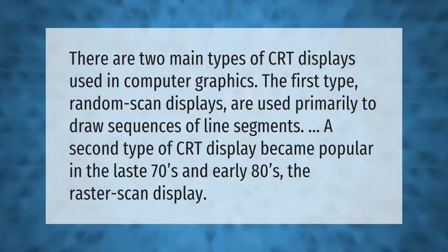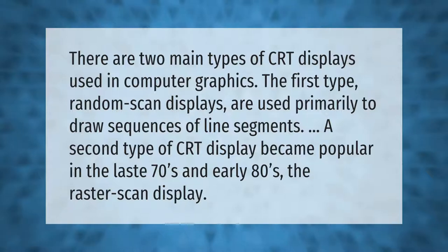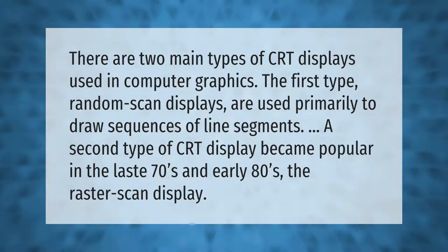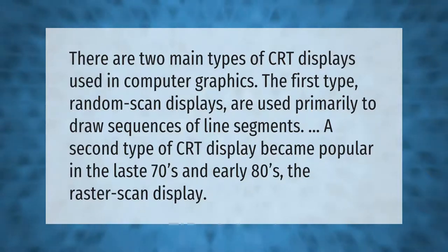There are two main types of CRT displays used in computer graphics. The first type, random scan displays, are used primarily to draw sequences of line segments. A second type of CRT display became popular in the late 1970s and early 1980s: the raster scan display.